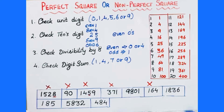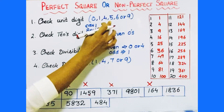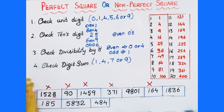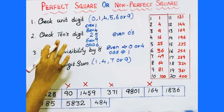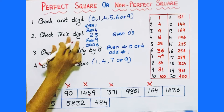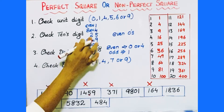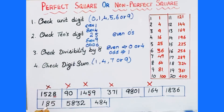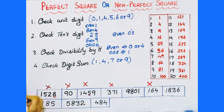Next number is 185. First test: unit digit is 5 — passed. Next test: if the unit digit is 5, the tens place should be 2. But this tens place is 8. So it fails — 185 is not a perfect square number.